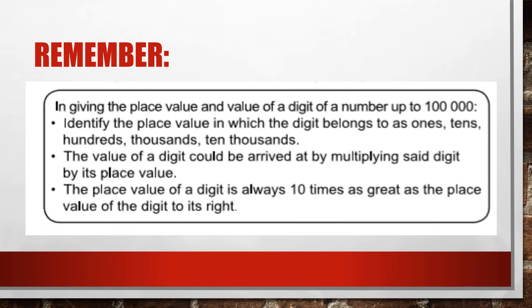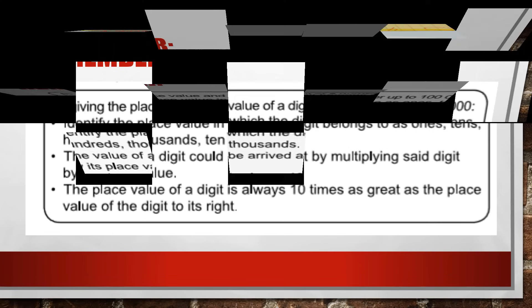Remember: in giving the place value and value of a digit of a number up to 100,000, identify the place value in which the digit belongs — ones, tens, hundreds, thousands, and ten-thousands. The value of a digit can be arrived at by multiplying the digit by its place value. The place value of a digit is always 10 times as great as the place value of the digit to its right.